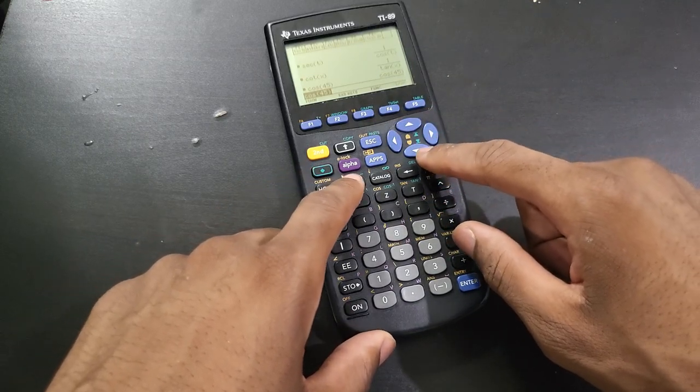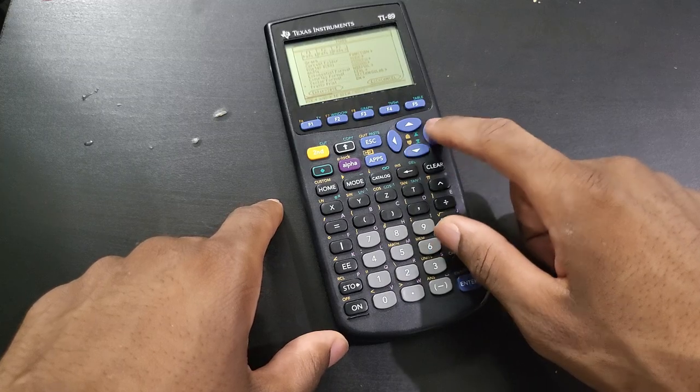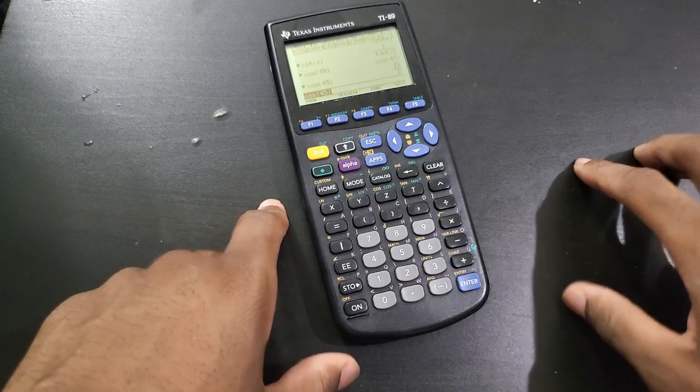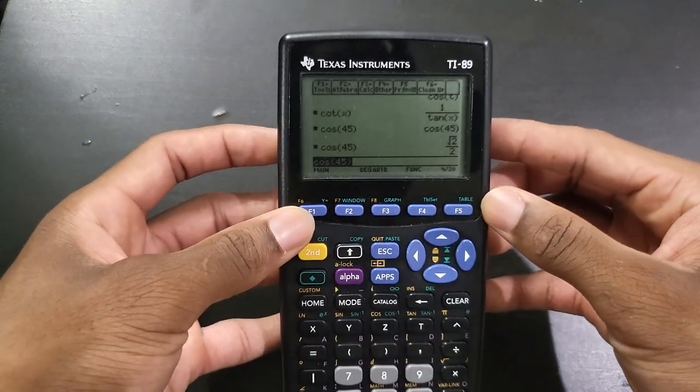You can just go to mode and change your angle to degree, press OK, and now we are going to get square root of 2 over 2 as you can see right now.